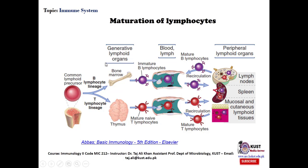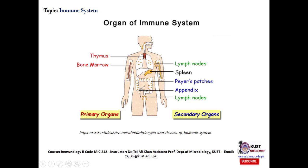B and T lymphocytes mature in the bone marrow and thymus respectively. They are then deployed to peripheral lymph nodes where they interact with antigens. Once the antigen is eliminated, they recirculate to the blood and lymph nodes. Organs of the immune system include primary organs — the thymus and bone marrow, where B and T lymphocytes are generated — and secondary organs such as lymph nodes and spleen, where lymphocytes interact with and eliminate antigens.